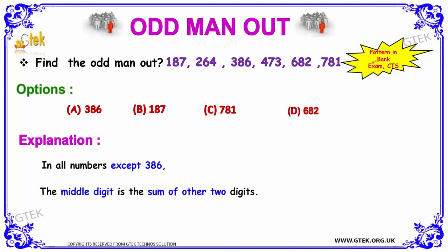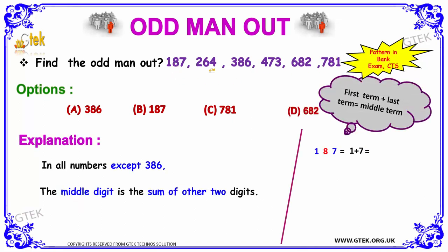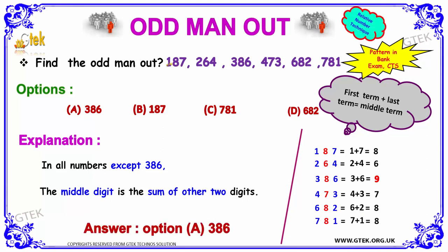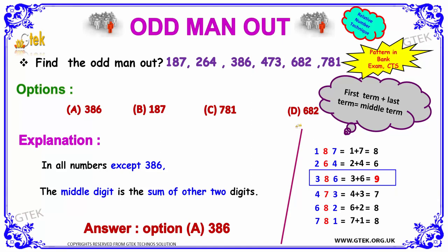This question is asked in a lot of bank exams and CTLs. The series is 187, 264, 386, 473, 682, 781. The logic is: first digit plus last digit equals the middle digit. For 187: 1 plus 7 is 8. For 264: 2 plus 4 is 6. For 473: 4 plus 3 is 7. For 682: 6 plus 2 is 8. For 781: 7 plus 1 is 8. But for 386: 3 plus 6 is 9, not 8 — it should be 396. So 386 is the odd man.